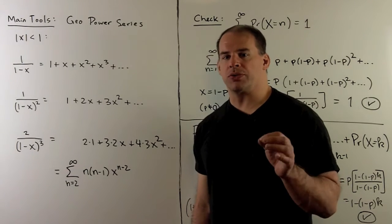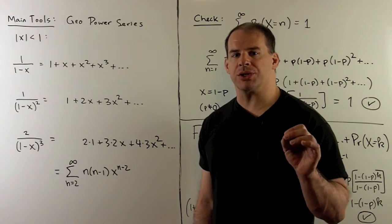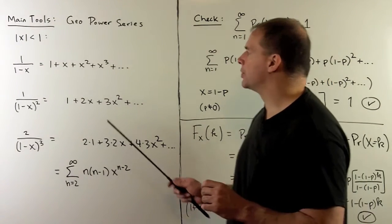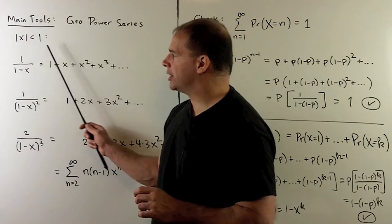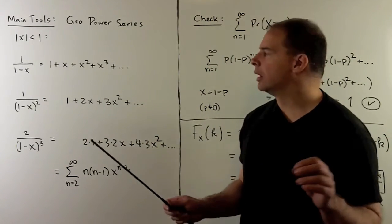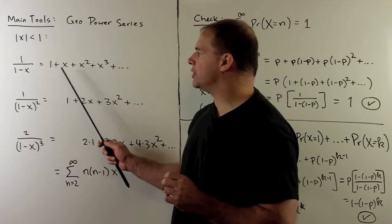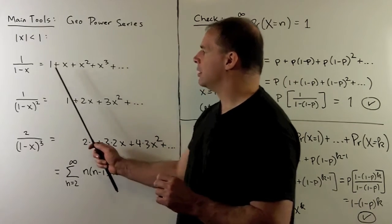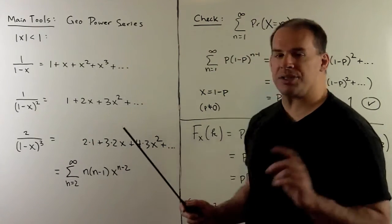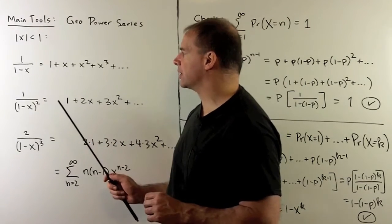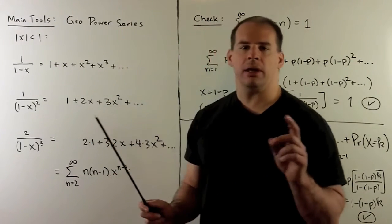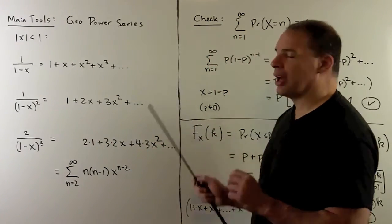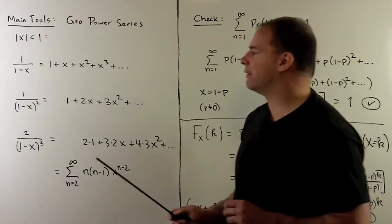The main tools for showing our results are based on the geometric power series — hence geometric random variables. We have the variable X restricted to the interval from minus 1 to 1. Consider the geometric power series 1 plus X plus X squared plus X cubed and so on. On this region, the series converges and the sum is equal to 1 over (1 minus X).